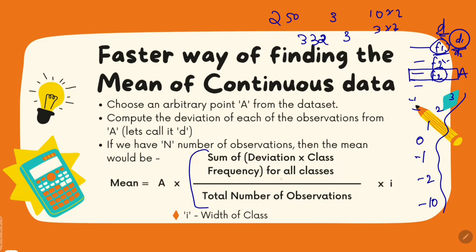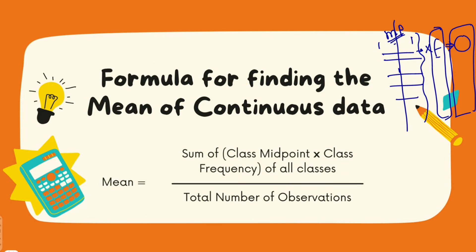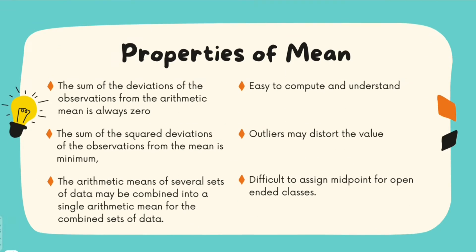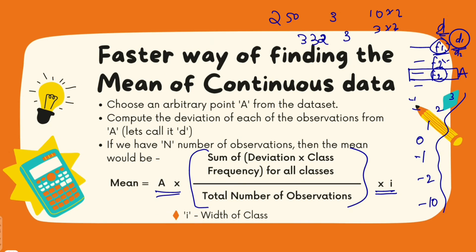But that doesn't stop there — we also have to multiply with the width of the class and add our arbitrary point to get the mean. So either of these two methods can be used for continuous data. Some say the deviation method is easier or faster, but it depends on your viewpoint.